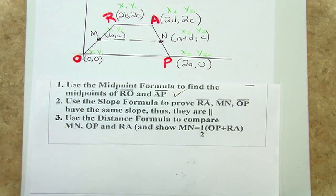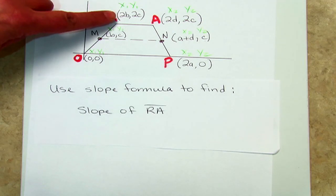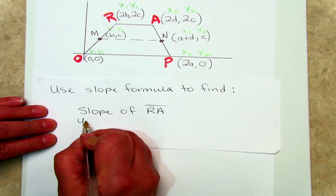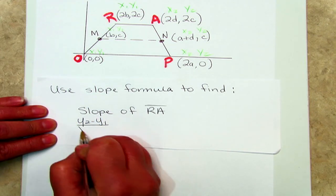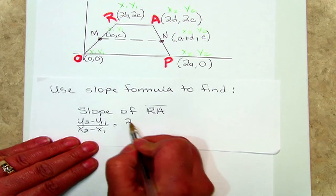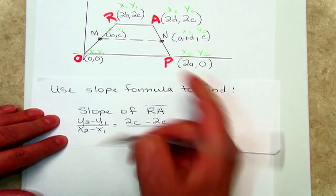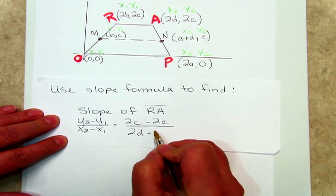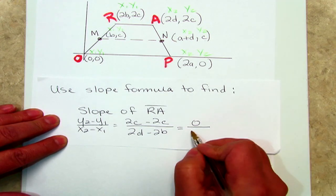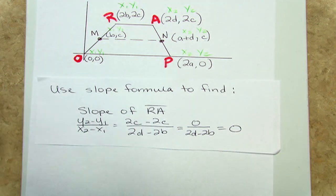Let's first find the slope of RA. You can see that I've labeled the points x1, y1, x2, y2, and we're just going to use our slope formula y2 minus y1 over x2 minus x1. y2 is 2c, y1 is 2c, x2 is 2d, x1 is 2b. This yields 0 over 2d minus 2b, which is just 0. The slope of RA is 0.